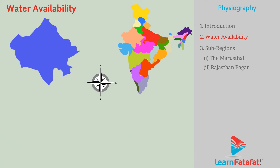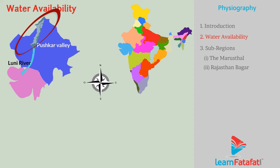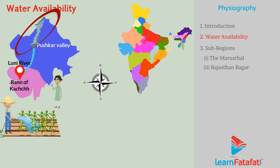Water Availability. River Luni rises in Pushkar Valley of the Aravalli Range and flows into the Rann of Kutch. The majority of the water need is fulfilled by this river. Unlike other rivers, the river does not reach the sea.